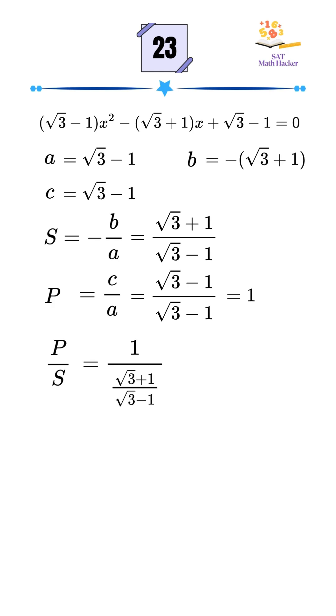Using the flip property, 1 divided by a fraction is just its reciprocal, so we flip the sum and get square root of 3 minus 1 over square root of 3 plus 1.